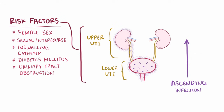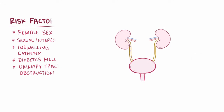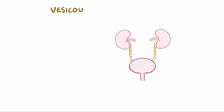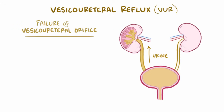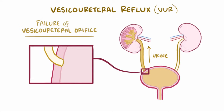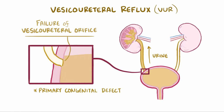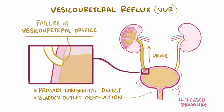One major factor that increases the risk of an upper UTI from a lower UTI spreading upward is vesicoureteral reflux, or VUR, which is where urine is allowed to move backward up the urinary tract. This can happen if the vesicoureteral orifice fails — the one-way valve that allows urine to flow from each ureter into the bladder, but not in the reverse direction. VUR can be the result of a primary congenital defect, or it can be caused by bladder outlet obstruction, which increases pressure in the bladder and distorts the valve.